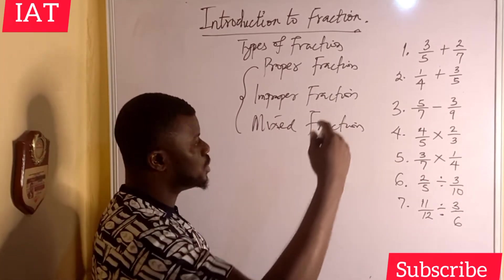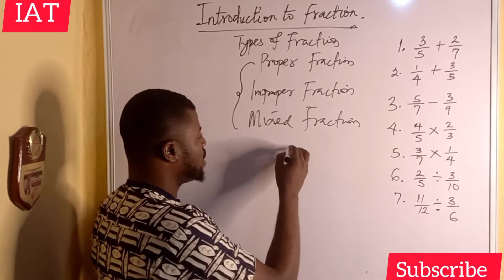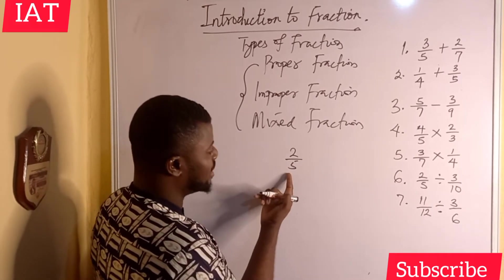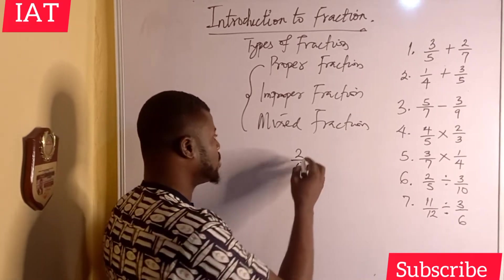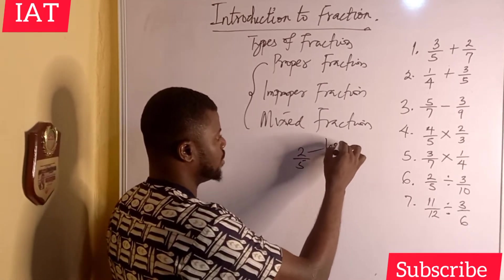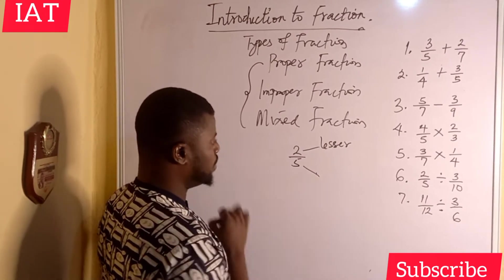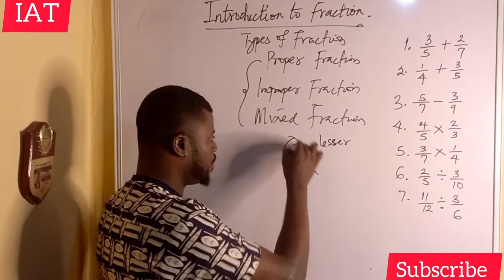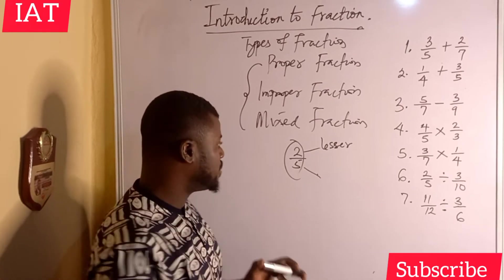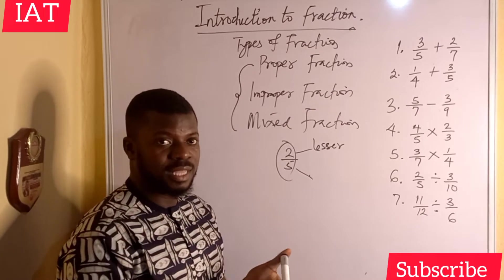Proper fraction is defined as when the numerator is lesser than the denominator. For example, if I have two over five — two is the numerator and it is lesser than the denominator five. You can see that two is lesser than five. This is called proper — something that is balanced.